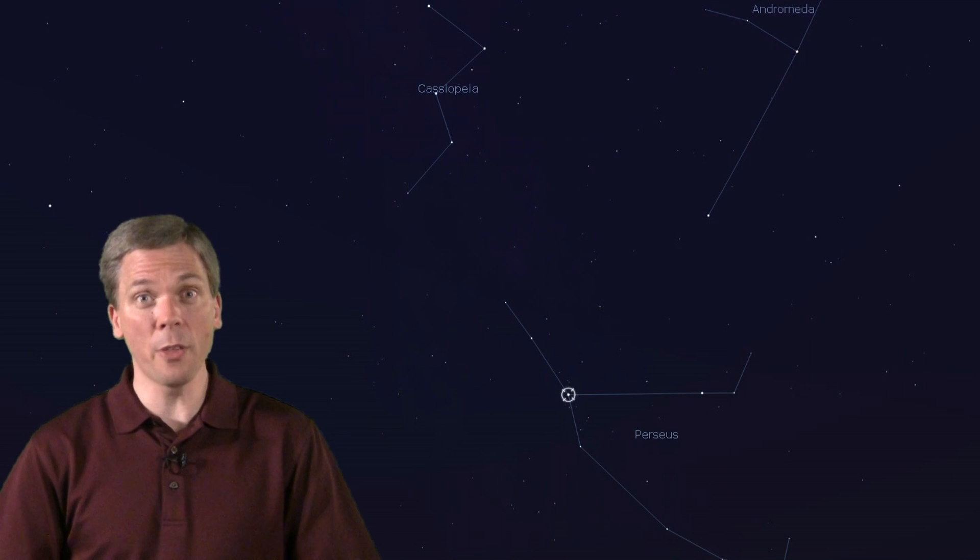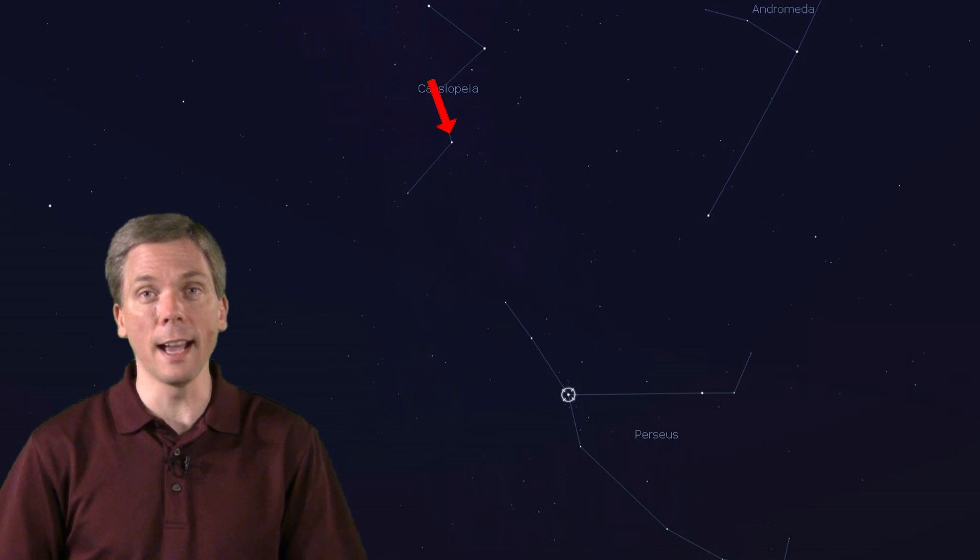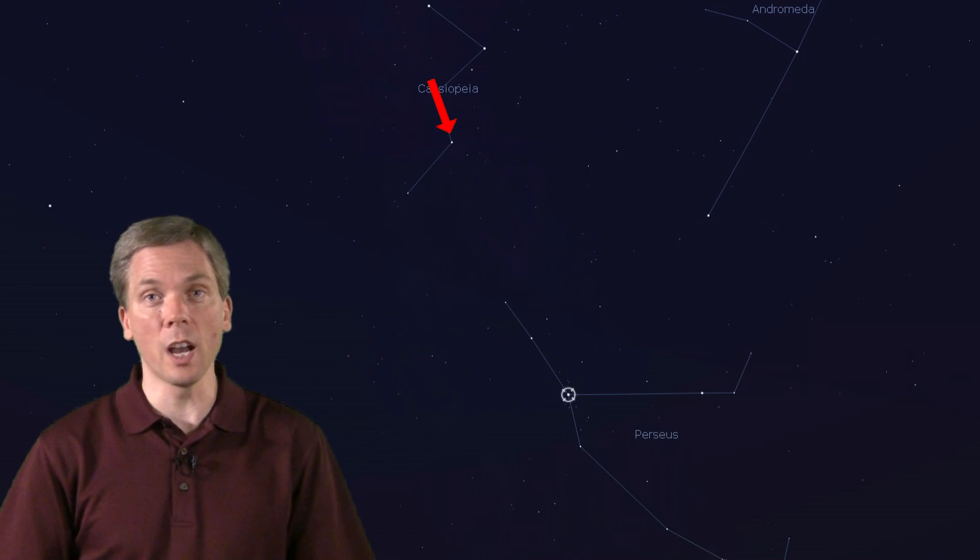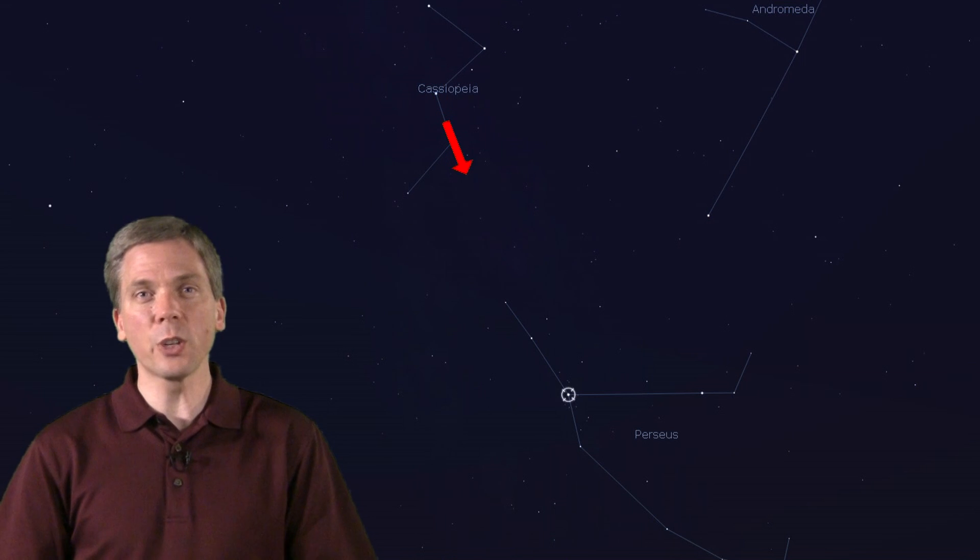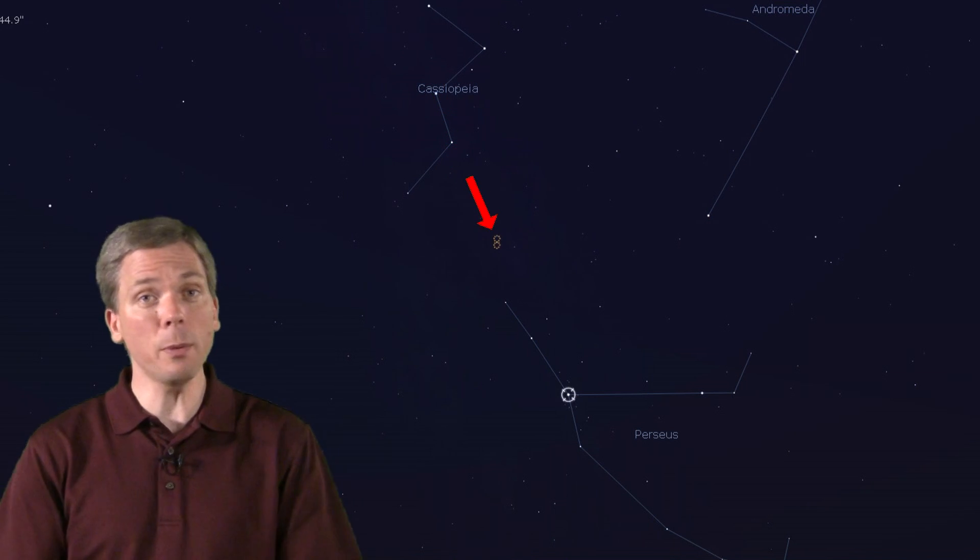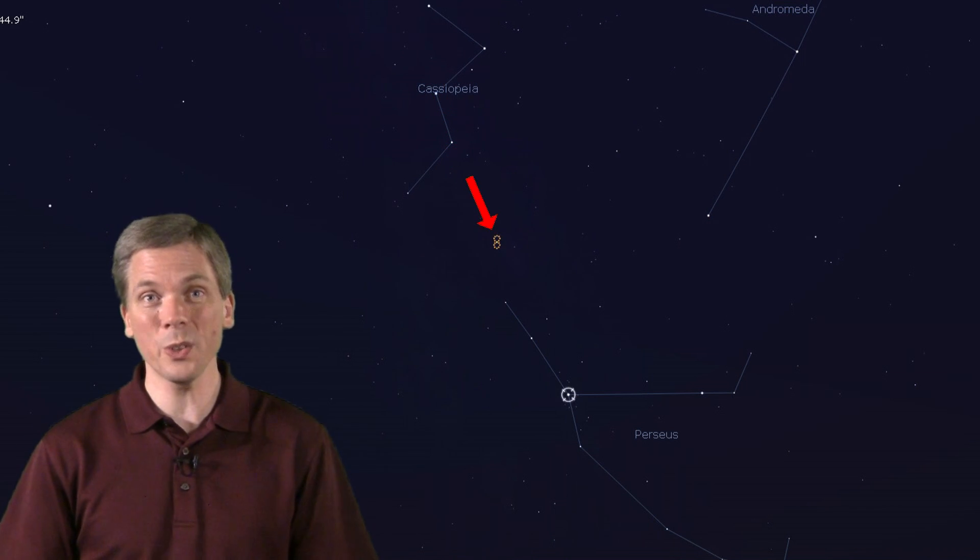Perseus has some other notable objects too. Looking north towards Cassiopeia, draw a line from gamma and delta Cassiopeia back down in the direction of Murphak. About 7 degrees that direction is the double cluster, two open clusters right next to each other. These are easily seen with binoculars, but far better and well-framed in a wide-field telescopic view.